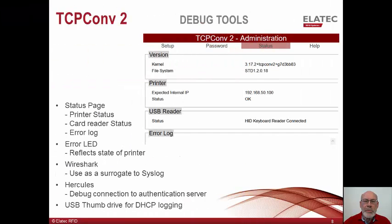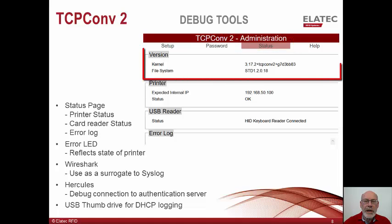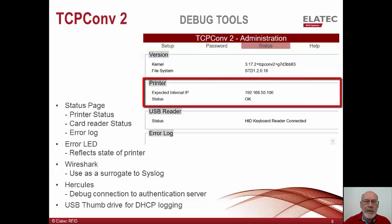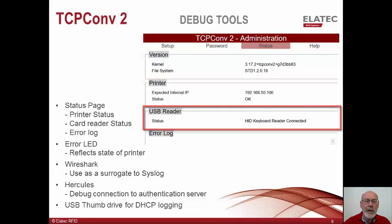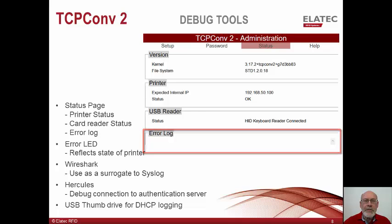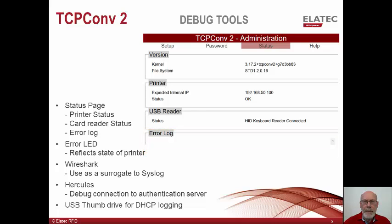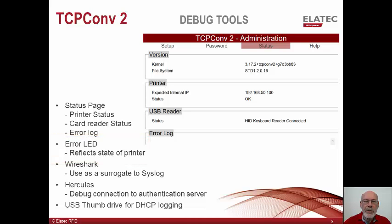There are a number of debug tools built into the converter, as well as two which can be used alongside the converter. The first tool is the status web page. On that screen, one can view the converter's kernel and application firmware versions, the status of the connected printer, the status of the connected card reader, and the error log. The converter pings the printer once per second. If the printer does not respond, the status will change from OK to No Link to Printer and the error LED will illuminate. Once the printer is connected, the status light will change back to OK and the error LED will go off. In the future, this status will be added to syslog.